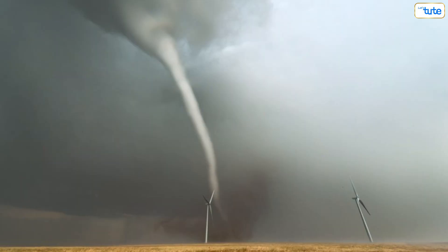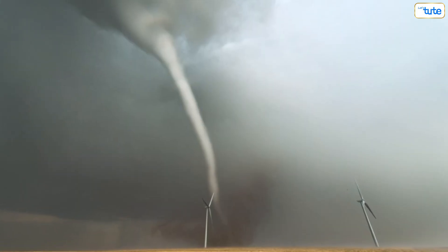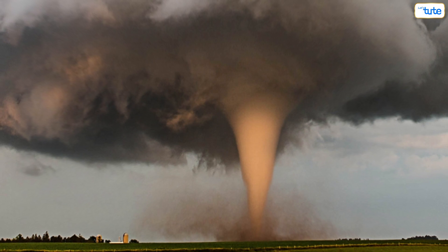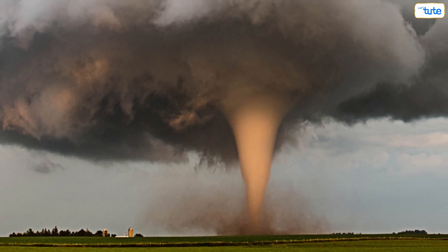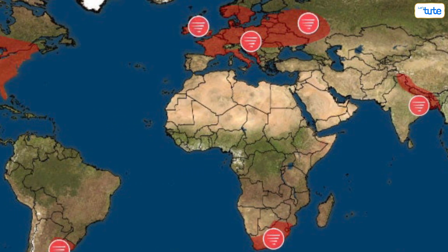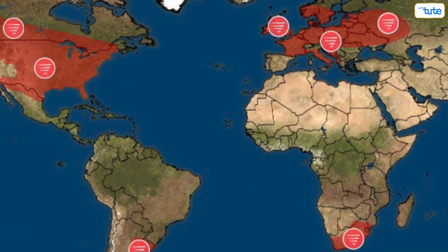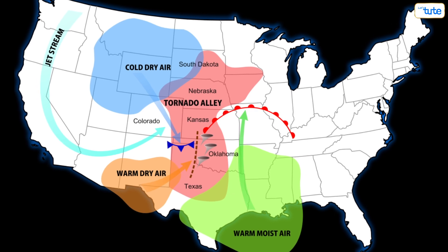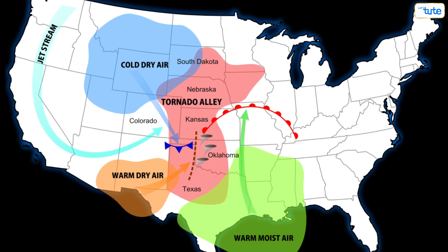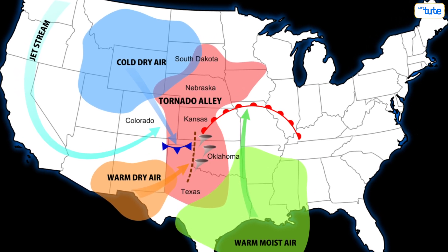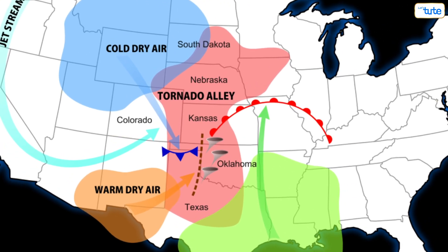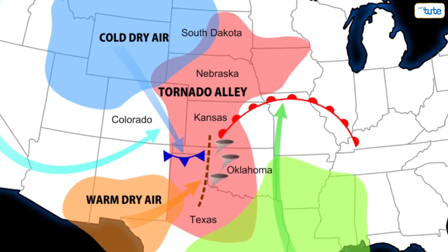The tornado's strength and size can vary. Some tornadoes are weak and short-lived, while others become powerful and long-lasting. Tornadoes can happen anywhere in the world, but the United States experiences the most tornadoes annually, especially in the area called Tornado Alley.